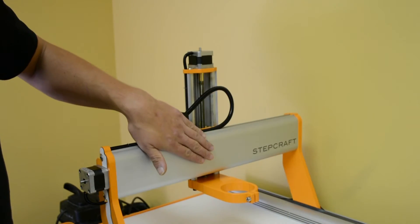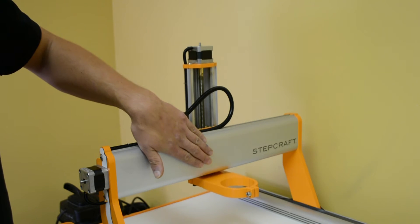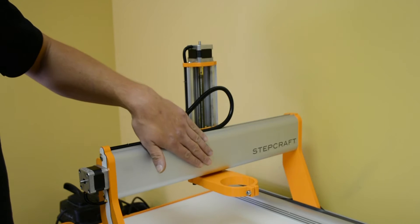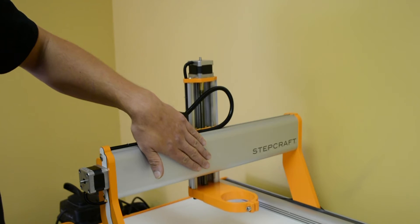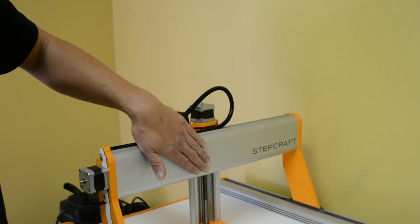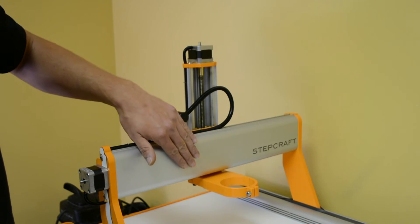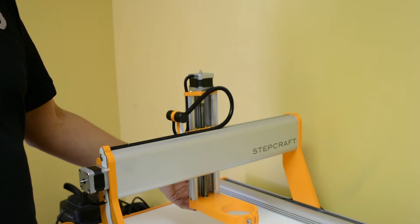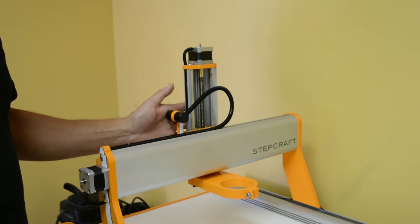With the bracket reinstalled we can rehome the Z axis. Now what you want to do is just as if you were assembling the machine, you want to run it up and down the Z axis to make sure that it's not binding anywhere. You may have to do a realignment by loosening the three screws at the bottom and the two at the top to get everything in alignment.